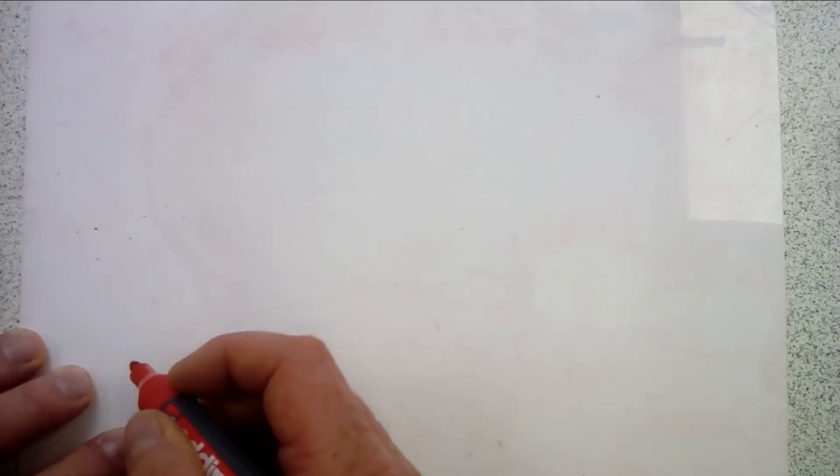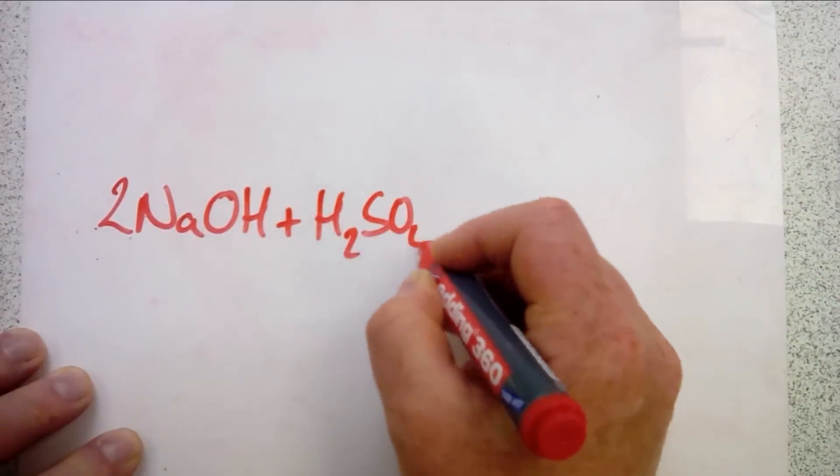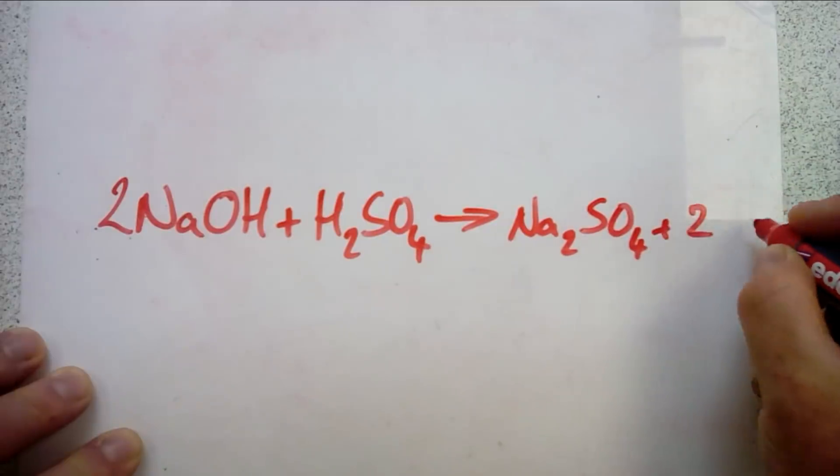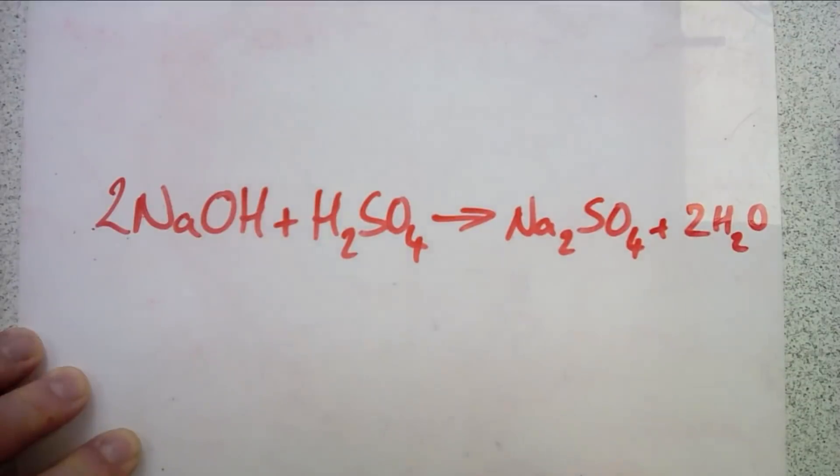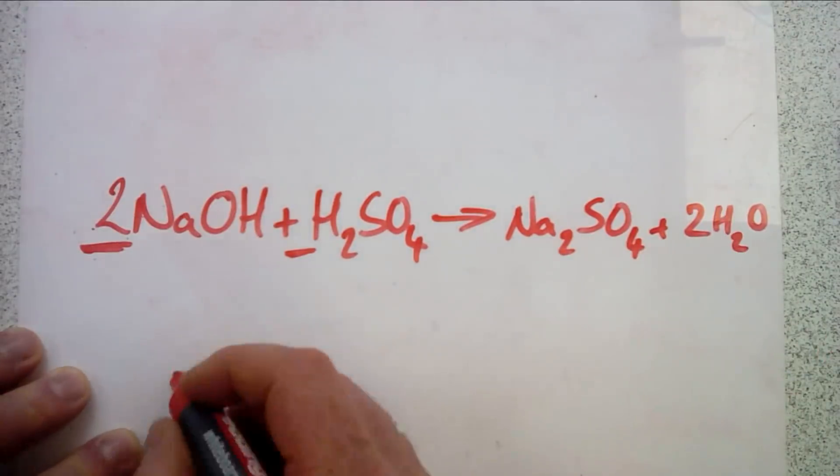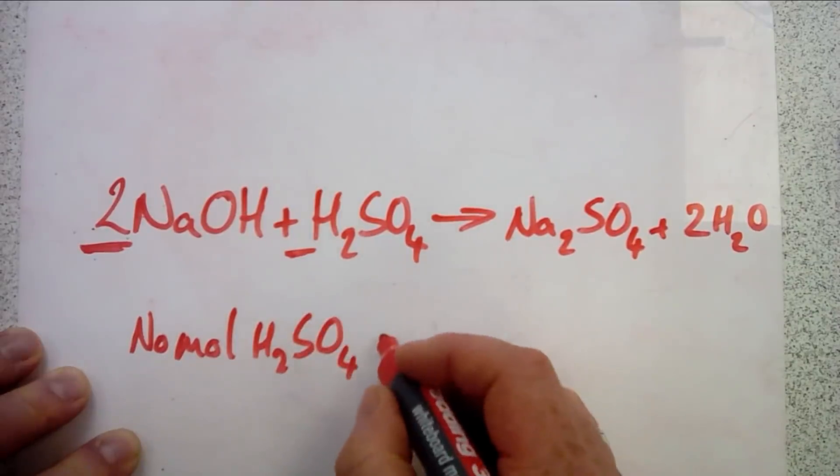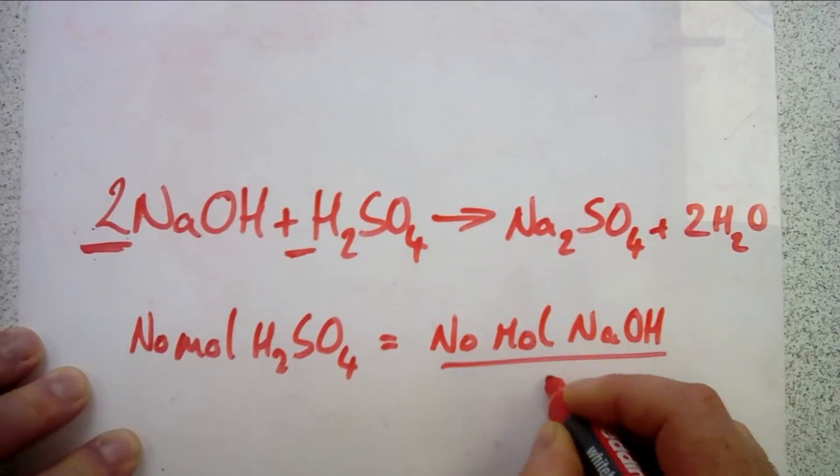If we look at the equation for sodium hydroxide neutralizing sulfuric acid, we see that we've got 2NaOH + H2SO4 goes to form Na2SO4 + 2H2O. This tells us that we need two moles of sodium hydroxide to neutralize one mole of sulfuric acid. Therefore, the number of moles of sulfuric acid equals the number of moles of sodium hydroxide divided by two.